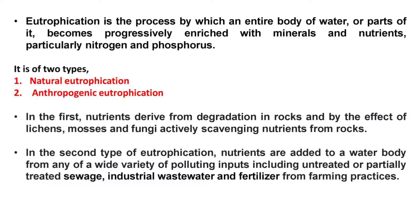Eutrophication is the process by which an entire body of water, or part of it, becomes progressively enriched with minerals and nutrients, particularly nitrogen and phosphorus. This process happens by two methods.